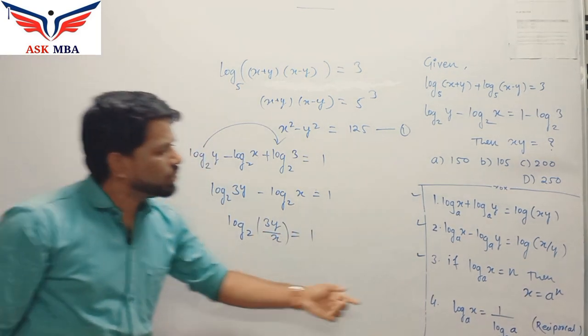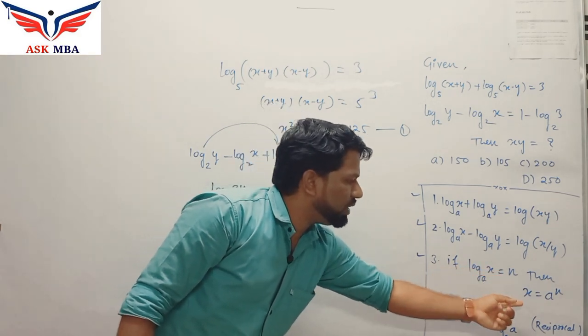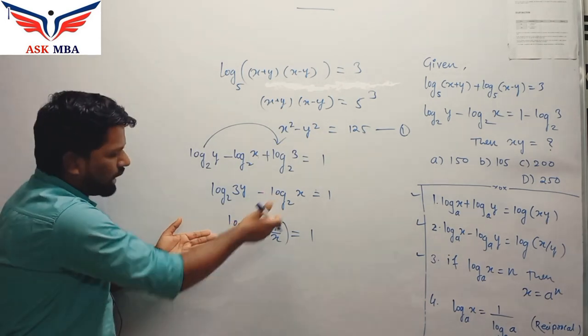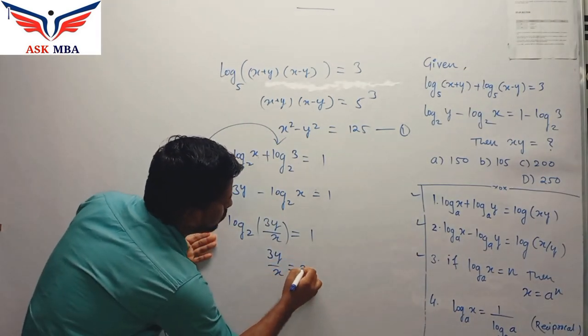So again, here we can use third property, that is log x base a equal to n, then we have x equal to a power n. So we have similar kind of situation here.